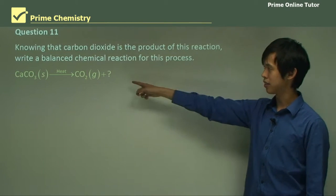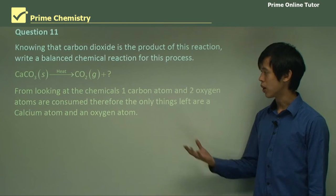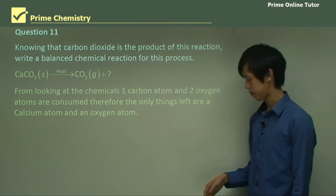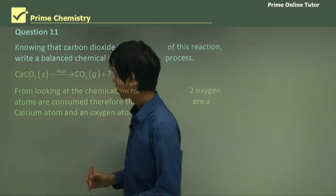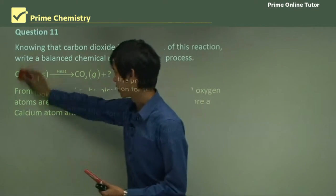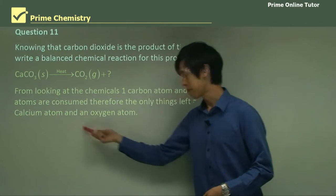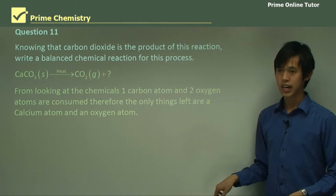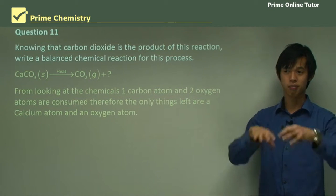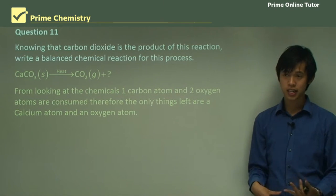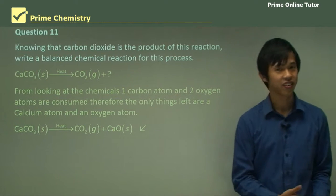Now the question then becomes, well, what is the question mark? So from looking at the chemicals, one carbon atom and two oxygen atoms are consumed. So we don't need to worry about this, and we don't need to worry about two of these. So there's only one left. So what could be left over possibly? So the only things that are left over are one calcium atom and an oxygen atom. And it's very likely that because they're already bonded together, because it's in the CaCO3 molecule as a whole, because they're already bonded together, it's likely that they'll stay bonded together. So you'll get CaO as your other product.